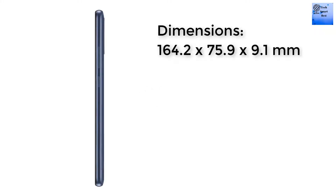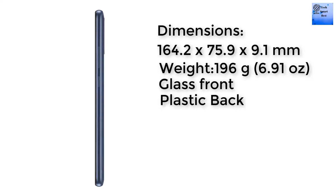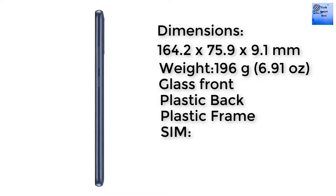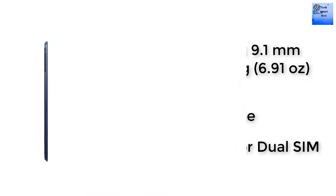The body dimensions of this smartphone are 164.2 x 75.9 x 9.1 mm. The weight of this smartphone is 196 grams. The body material is glass front, plastic back, and plastic frame. Now about the SIM: single SIM or dual SIM.